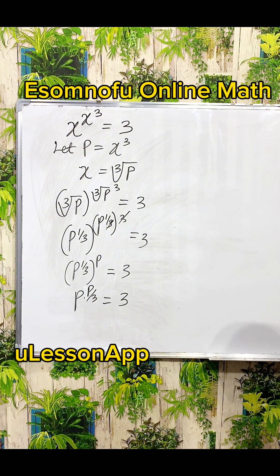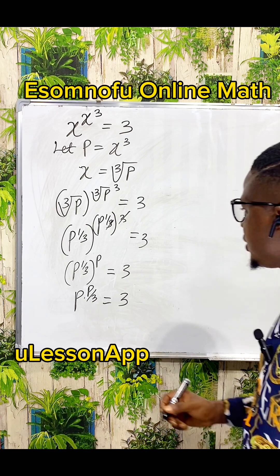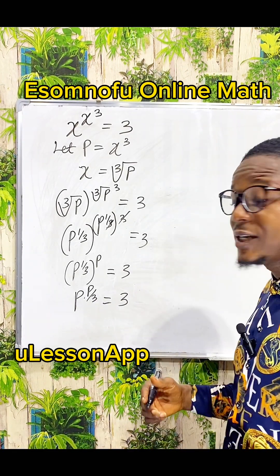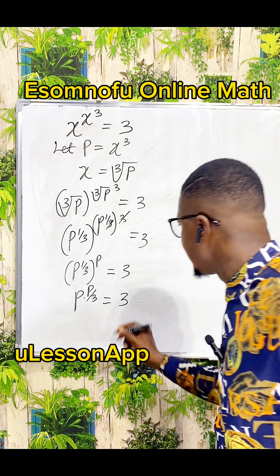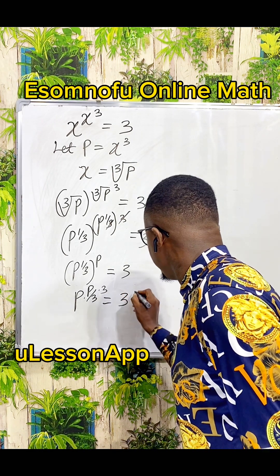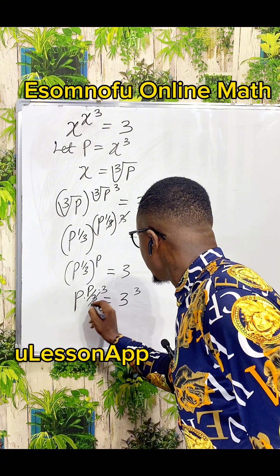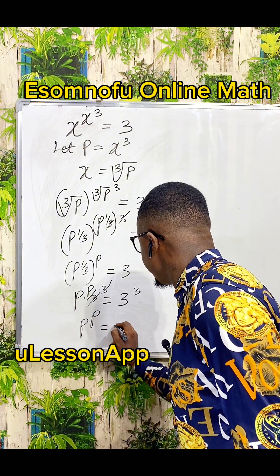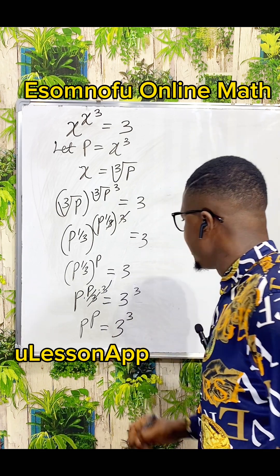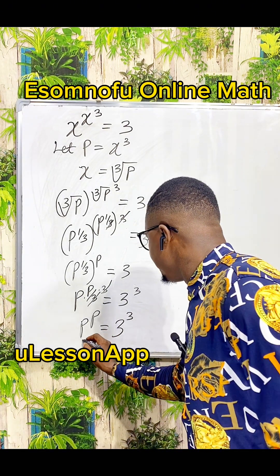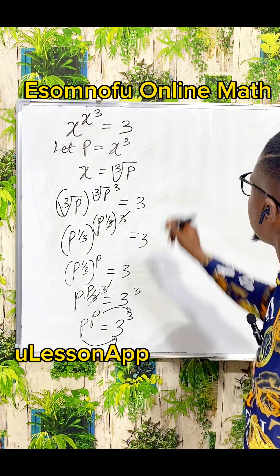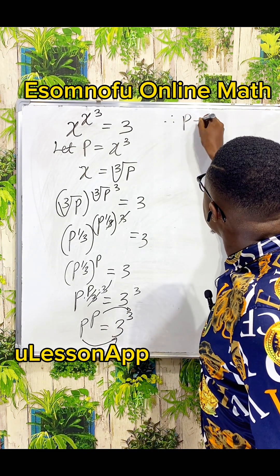And we need to get the value of p. So what if I decide to raise both sides to a power of 3? Because in an equation, whatever you do to both sides will not affect it. So I can raise both sides to a power of 3. You will see that this will cancel out, giving me that p to the power of p is equal to 3 to the power of 3. From this, you can just conclude that p is 3, because base is equal to base, power is equal to power.